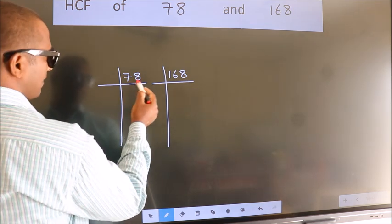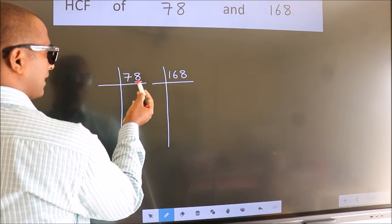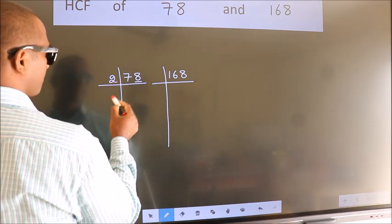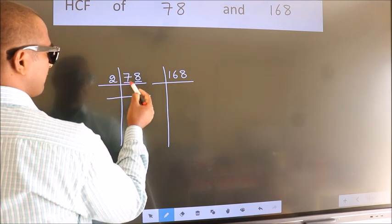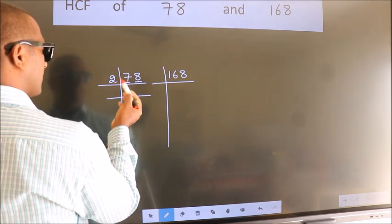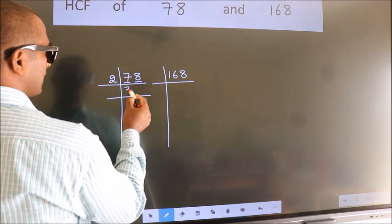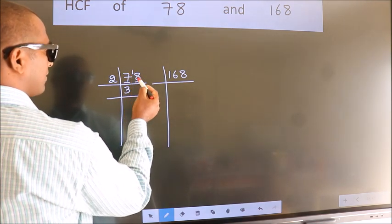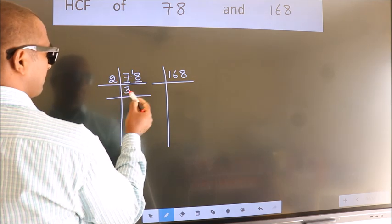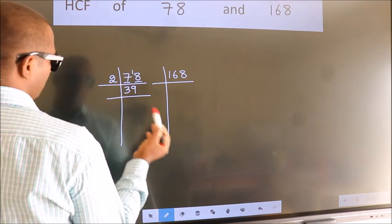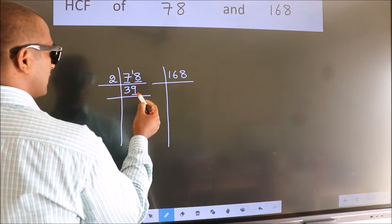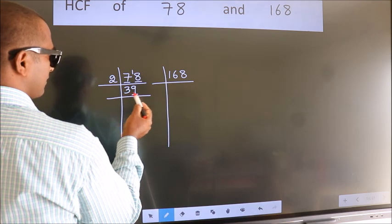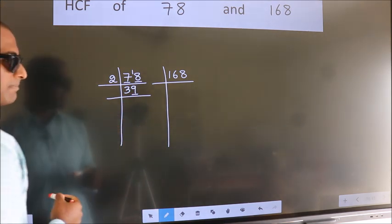In this number, last digit 8, even number, so take 2. First number 7. A number close to 7 in 2 table is 2 times 3 is 6. 7 minus 6, 1 minus 1 carried forward 18. When do we get 18 in 2 table? 2 nines 18. Now last digit 9 not even, so this number is not divisible by 2.